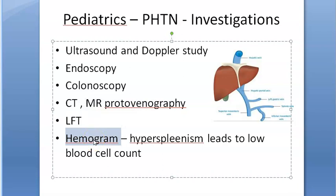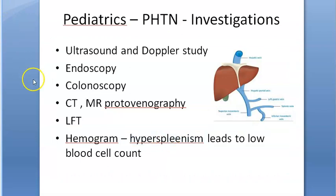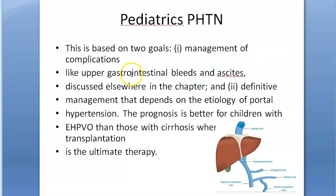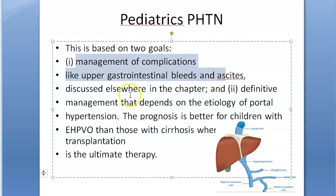A hemogram or blood picture is ordered to check for anemia, pancytopenia, thrombocytopenia, or leukopenia, because hypersplenism causes the overactive spleen to prematurely destroy all blood cells, leading to pancytopenia.